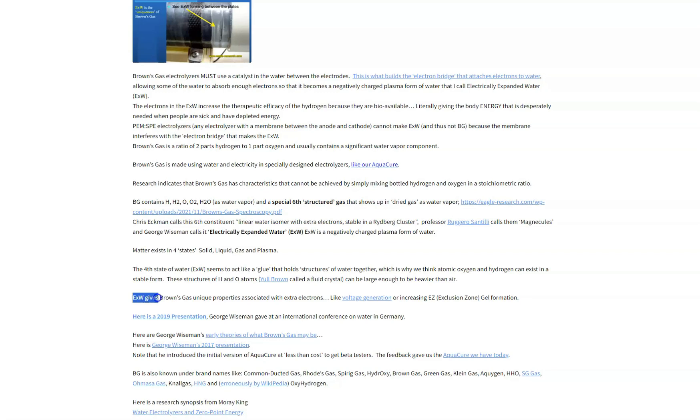Right here on this line it says EXW, electrically expanded water, gives Brown's gas unique properties associated with extra electrons like voltage generation. So basically what it's saying is if EXW can only be made in an alkaline electrolyzer, then a PEM electrolyzer wouldn't have this electrically expanded water and wouldn't be able to have unique properties associated with extra electrons. Let's take a look at this video. This is an old video and this is a demonstration of how EXW is generating extra electrons or voltage.